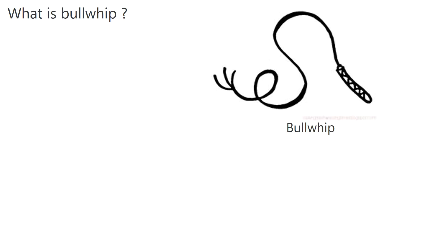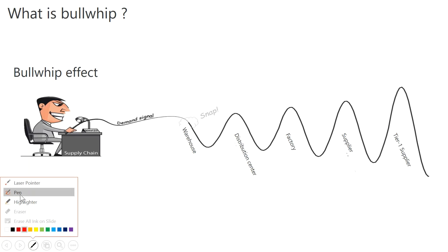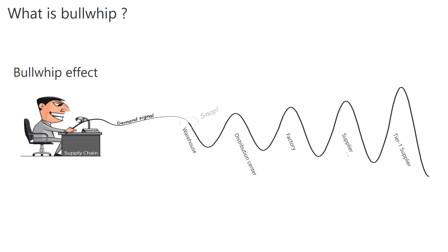A bullwhip is a whip used to control. Looking at this figure, here is the customer holding the bullwhip and giving the demand signal. This demand signal can be a demand increase, a demand drop, or any variation. This is the end consumer — like you or me.